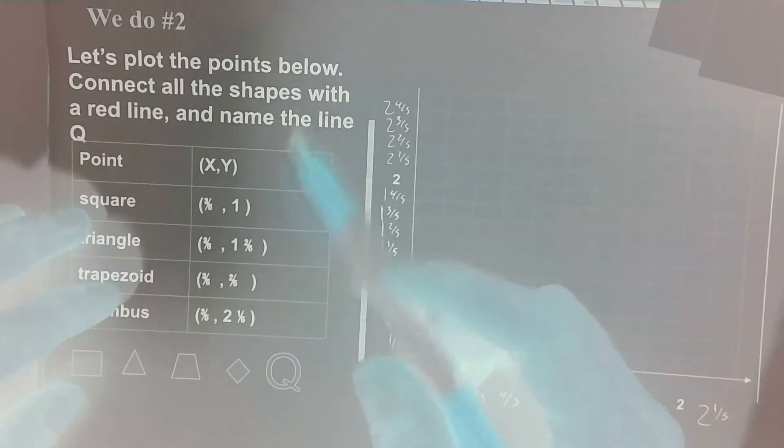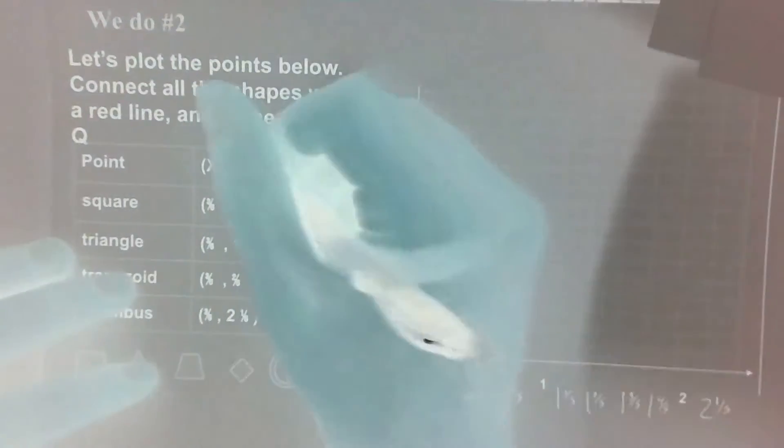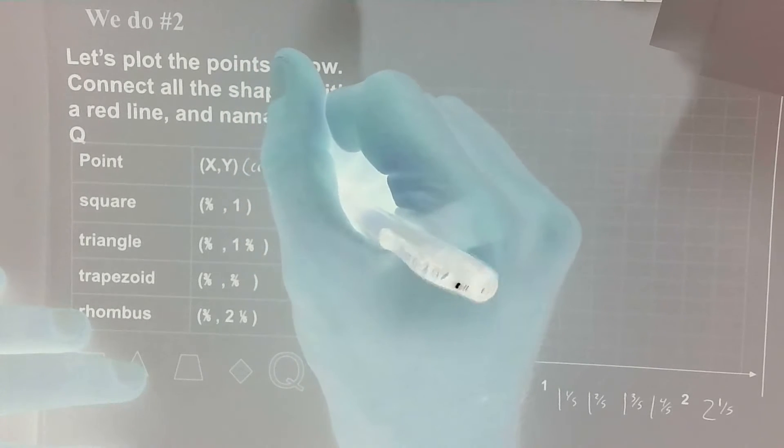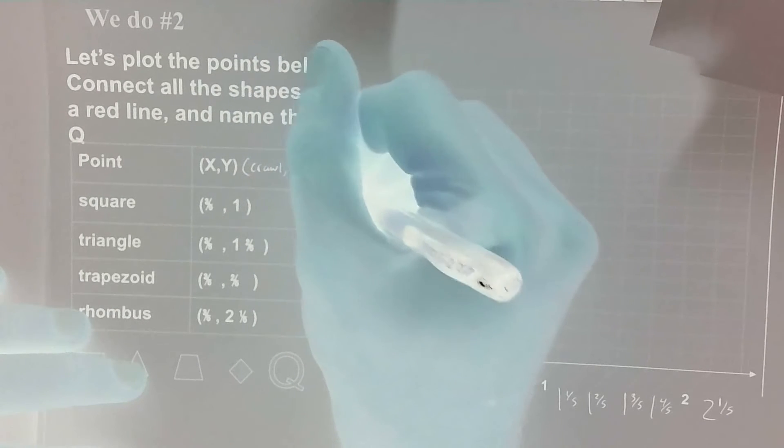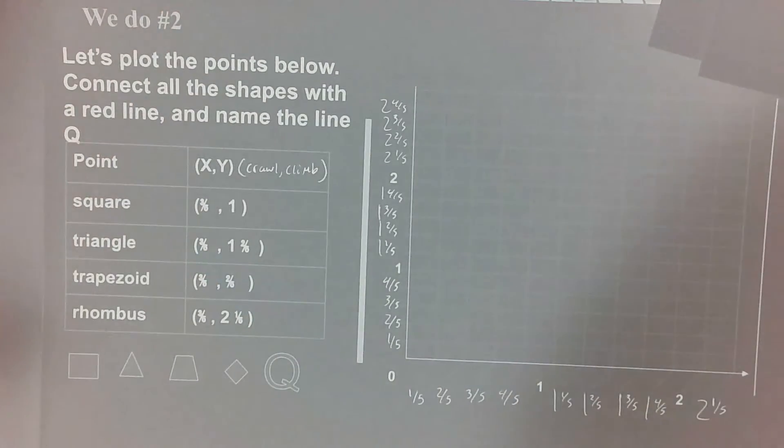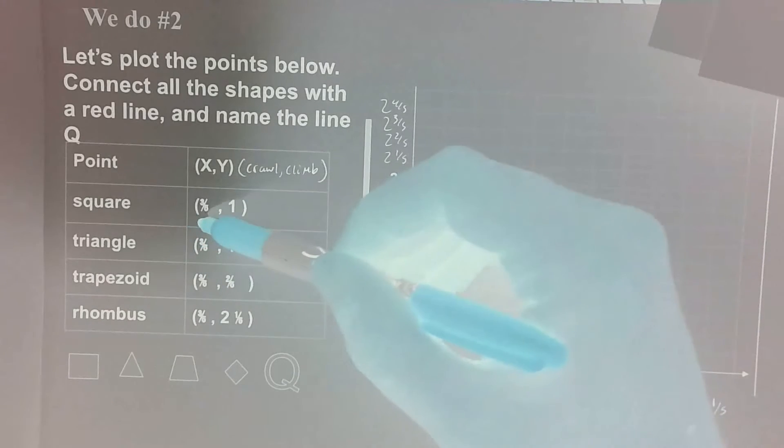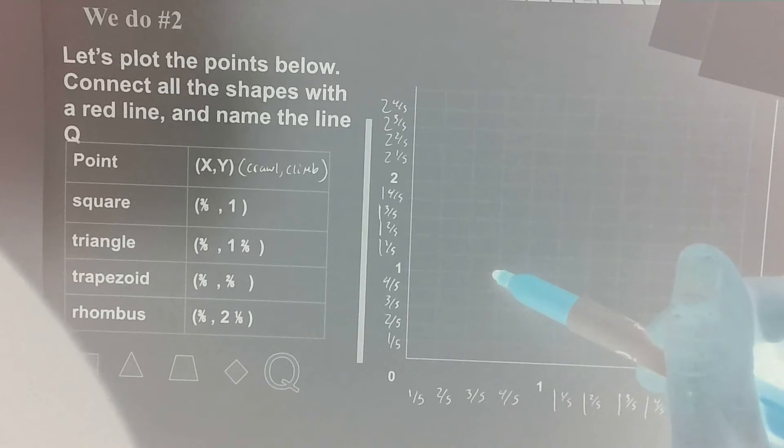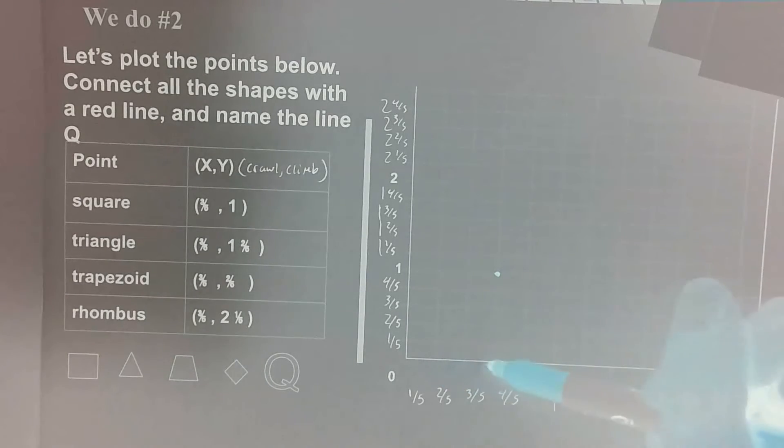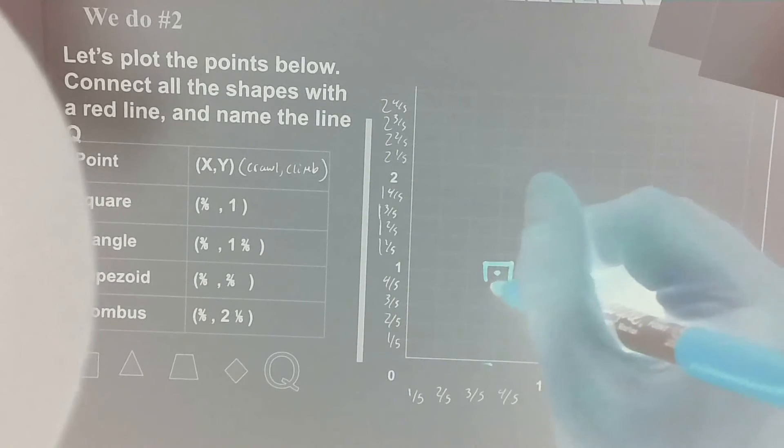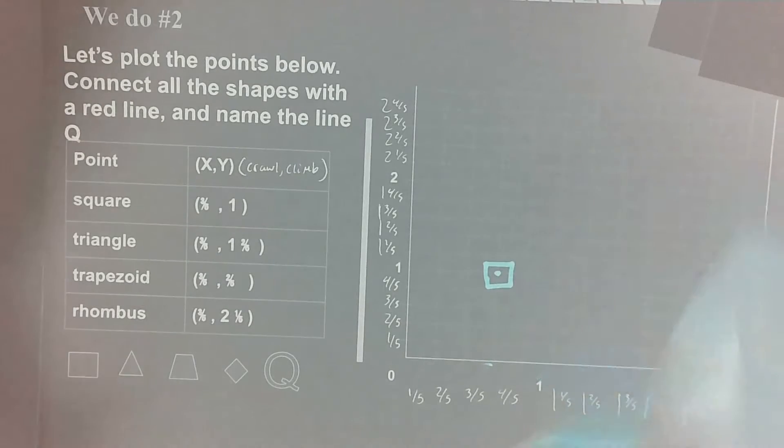First, let's plot the square. Just like yesterday, let's remind ourselves that the x and the y is the crawl and then the climb. Square coordinates are three fifths and one. A crawl of three fifths, a climb of one whole. So drag or draw the square right there.